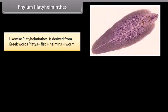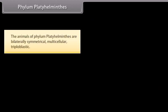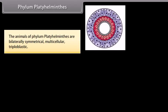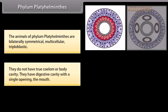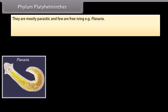Phylum Platyhelminthes. Platyhelminthes is derived from Greek words: platis, meaning flat, plus helminthus, meaning worm. They have leaf-like or ribbon-like, dorsal-ventrally flat bodies, so they are also known as flatworms. The animals of Phylum Platyhelminthes are bilaterally symmetrical, multicellular, and triploblastic. They do not have a true coelom or body cavity. They have a digestive cavity with a single opening, the mouth. They are mostly parasitic, and few are free-living, e.g. Planaria.